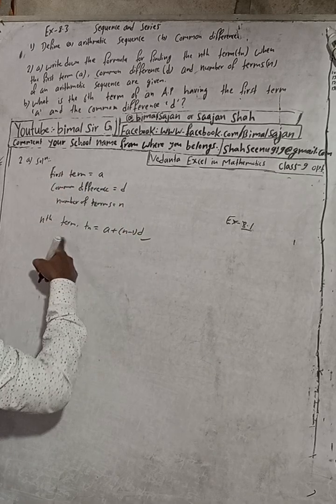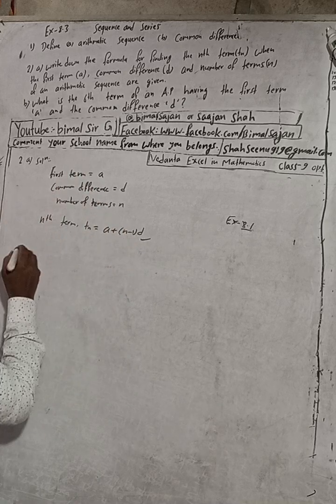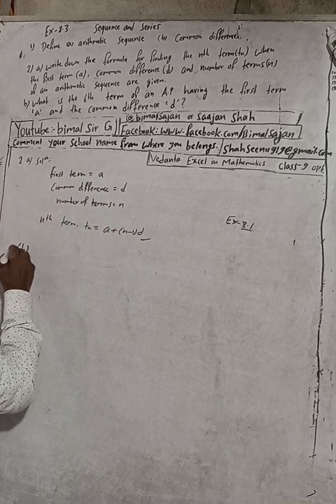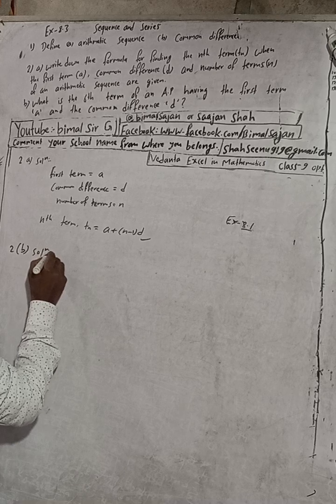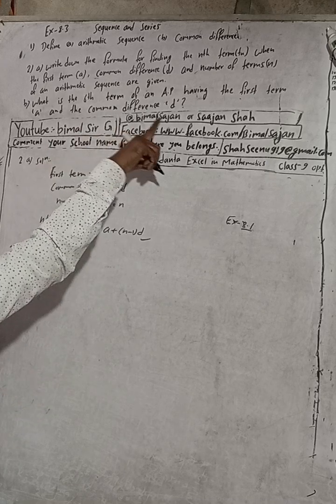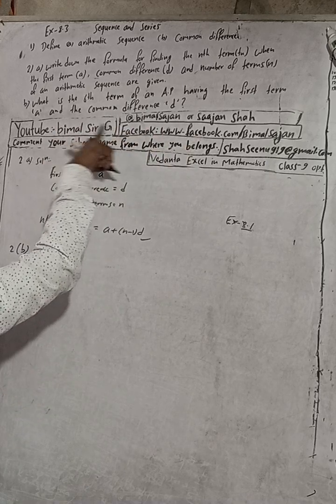So tn is equal to this. Now part B: what is the sixth term of an AP having the first term a and the common difference d?